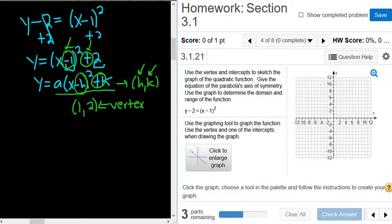Now the question also wants an intercept graph. So the easiest intercept to find is the y-intercept. So what you can do is you can plug in x equals 0. To find any intercept, you set the other one equal to 0. So to find the y-intercept, you set x equal to 0.